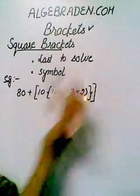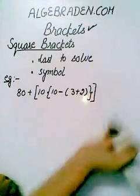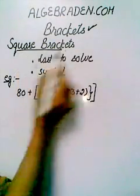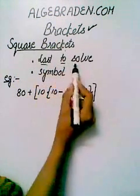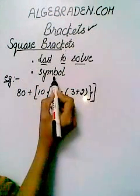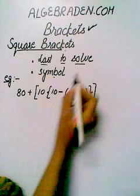Square brackets are the third type of brackets. Square brackets are last to solve, and their symbol is demonstrated.